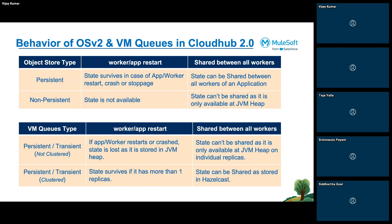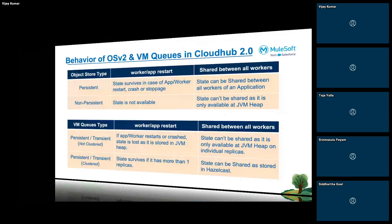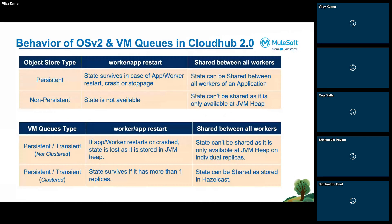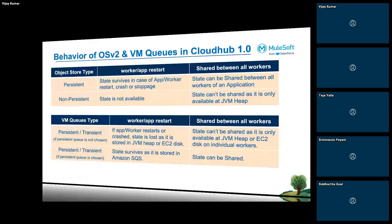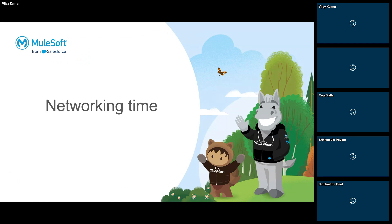Any questions on the behavior of object store and VM queues in CloudHub 2.0? Object store behavior in CloudHub 1.0 and 2.0 is the same because Object Store v2 is also available in CloudHub 2.0, so the behavior remains the same. If there are any remaining questions regarding the whole session we can discuss.